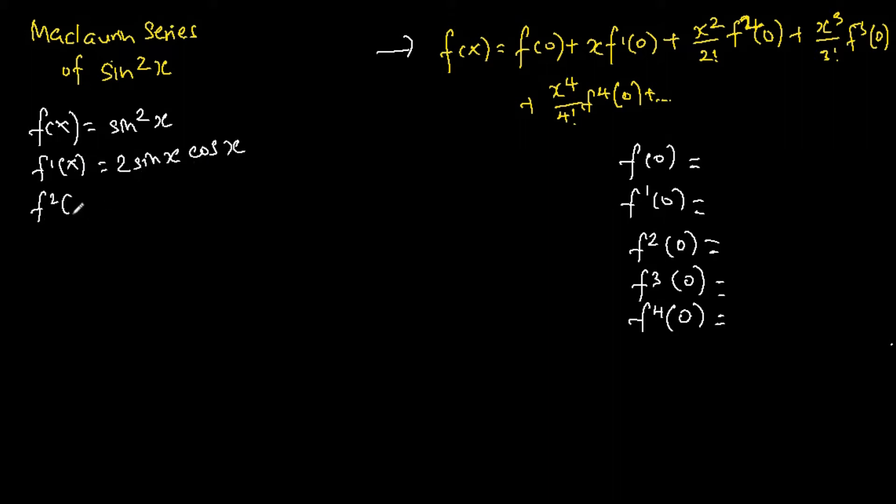Differentiating the function two times, we have to do the product rule of differentiation because there are two different terms. So the first one would be 2 sine x differentiating with respect to x of cosine x plus 2 cosine x differentiating with respect to x of sine x. So what do we get in there? We get 2 cosine squared x minus 2 sine squared x.